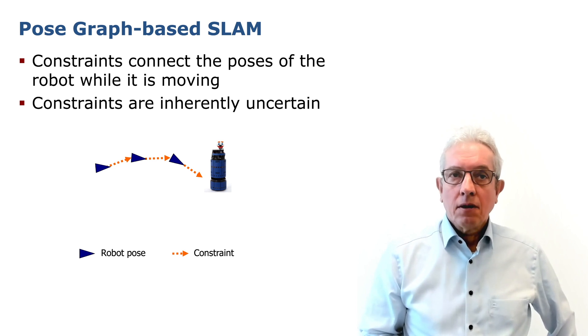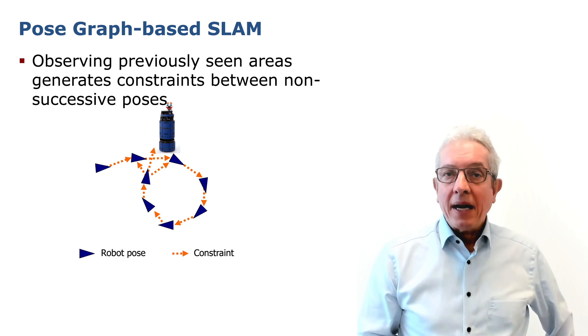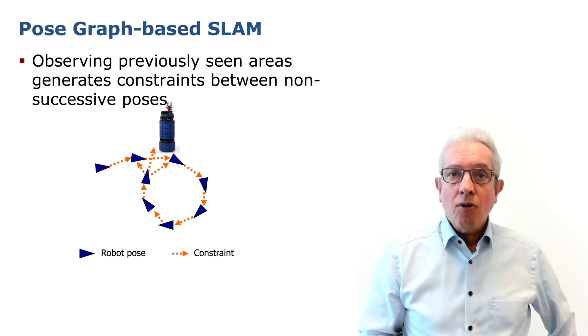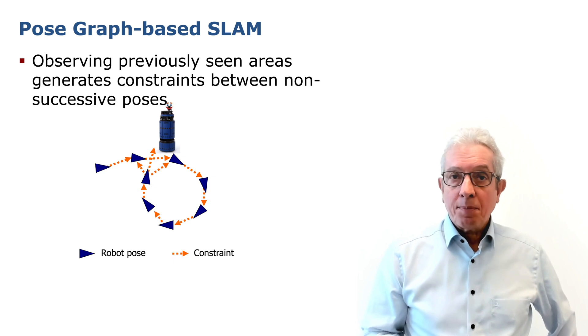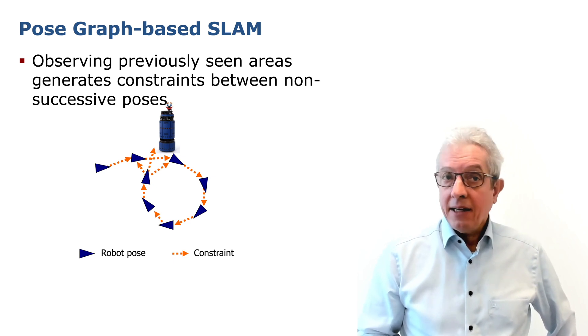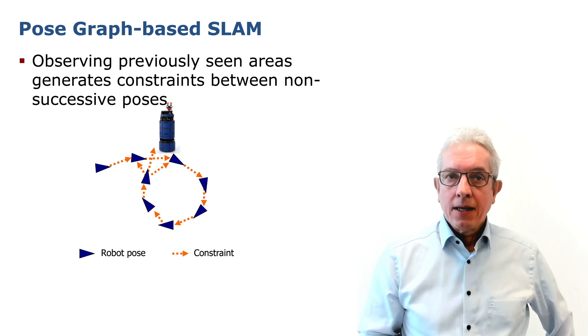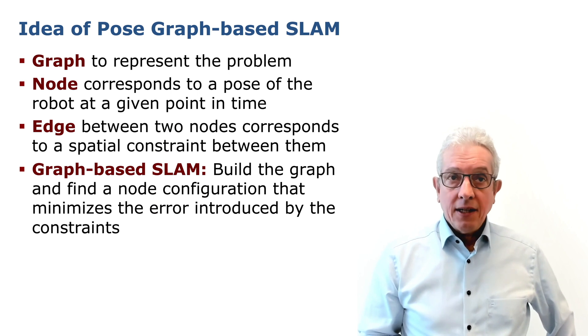Whenever the robot gets back to a place it has been to before and observes this with its exteroceptive sensor, LIDAR or a camera, then we generate additional edges or constraints between the corresponding poses. This gives us the so-called pose graph. The overall idea is to use a graph to represent the overall problem with nodes corresponding to the pose of the robot at a given point in time and an edge between two nodes corresponding to a spatial constraint between the adjacent nodes.